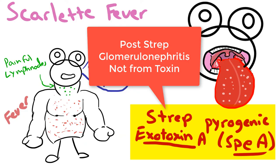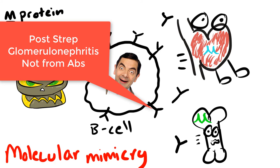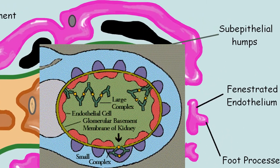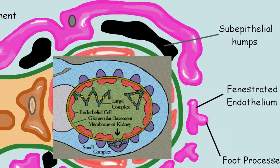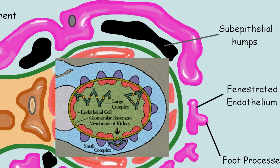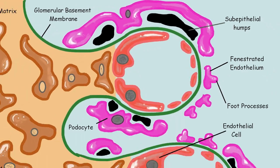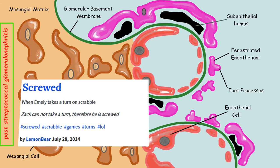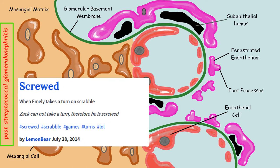This damage is not directly due to the bacterial toxin or antibodies, but instead due to the immune complexes which clump up the glomeruli and activate complement and inflammatory cells, ultimately disrupting everything.